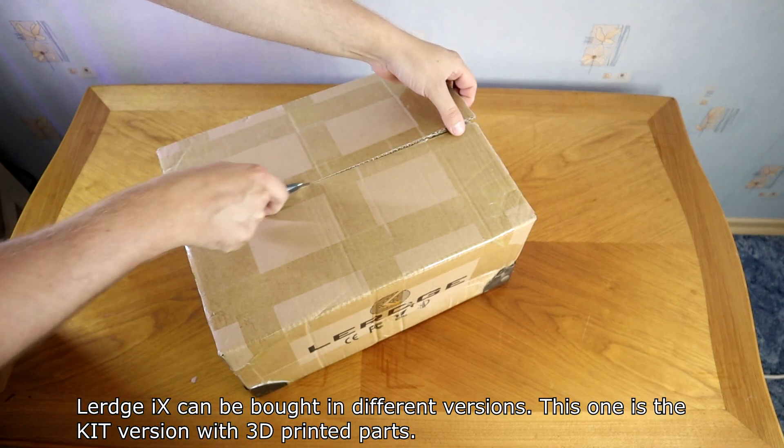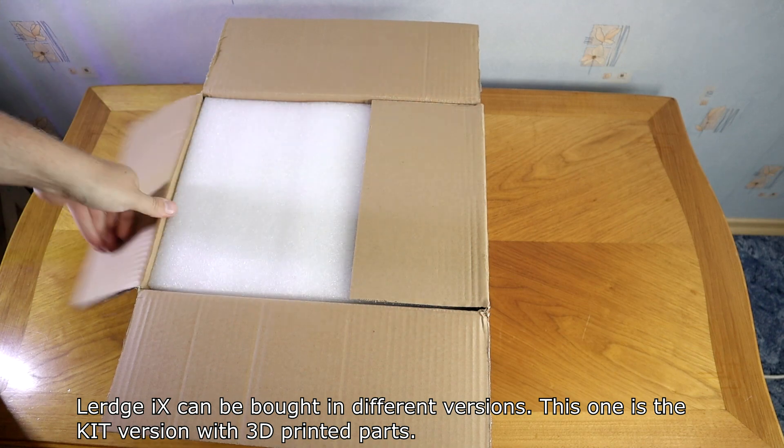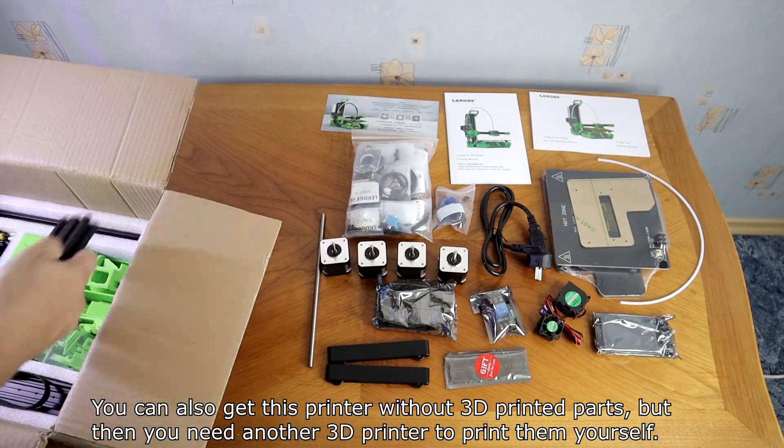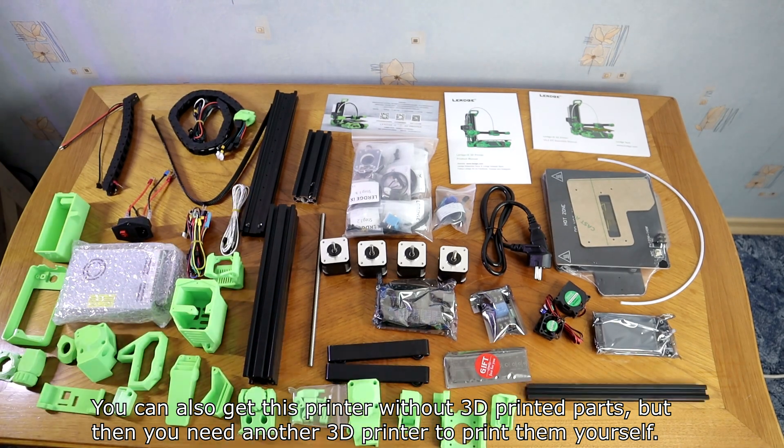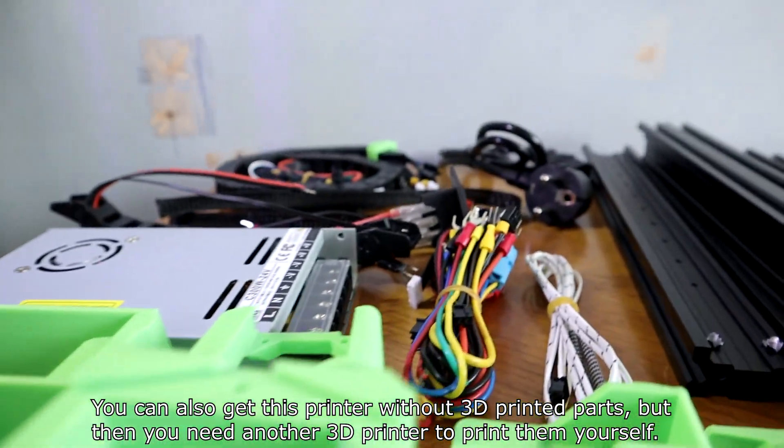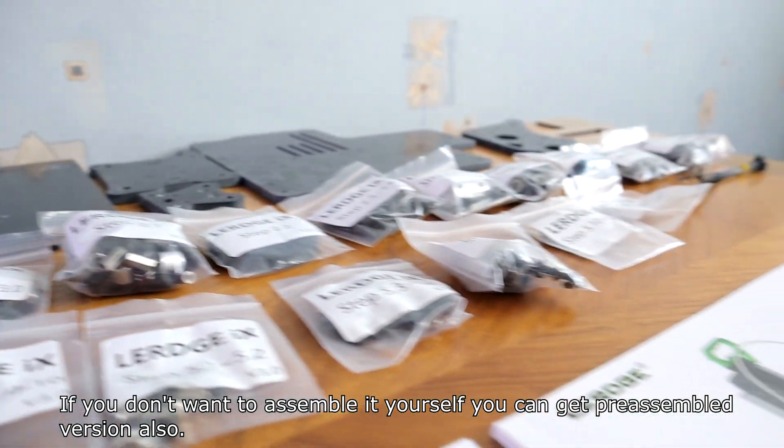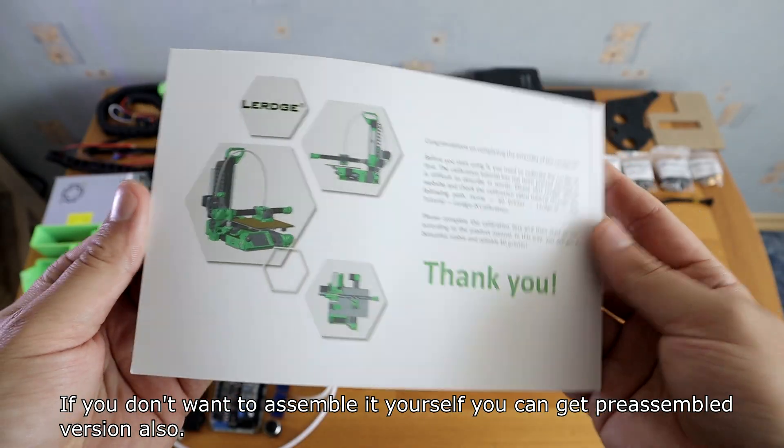Lurch iX can be bought in different versions. This one is the kit version with 3D printed parts. You can also get this printer without 3D printed parts, but then you need another 3D printer to print them yourself. If you don't want to assemble it yourself, you can get a pre-assembled version also.